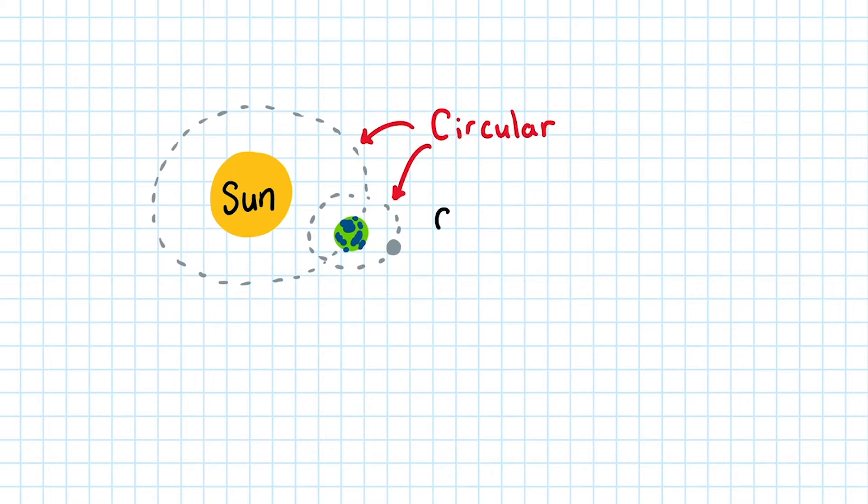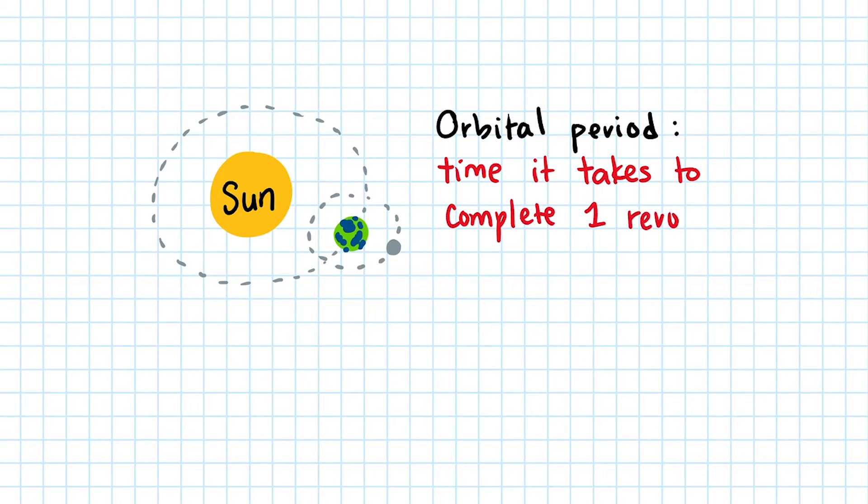That's going to simplify our calculation of orbital velocity. But before we do that, let's define what orbital period is. Orbital period is the time it takes for an object to complete one revolution.